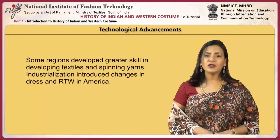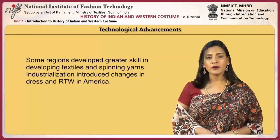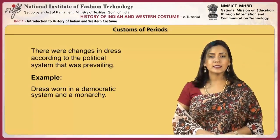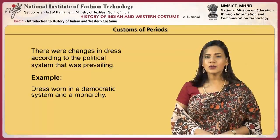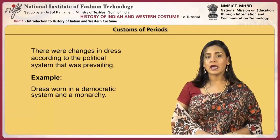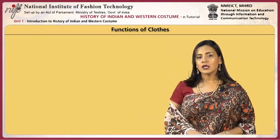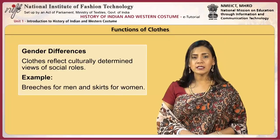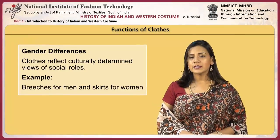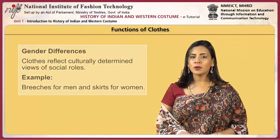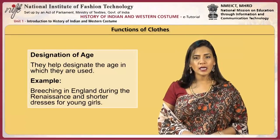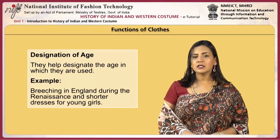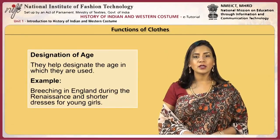Industrialization introduced changes in dress and ready-to-wear in America. There were changes in dress according to the political system that was prevailing. A good example of this is the dress worn in a democratic system versus a monarchy. Clothes reflect culturally determined views of social roles, for example breeches for men and skirts for women. Clothes help designate the age in which they are used, for example breeching in England during the Renaissance and shorter dresses for young girls.